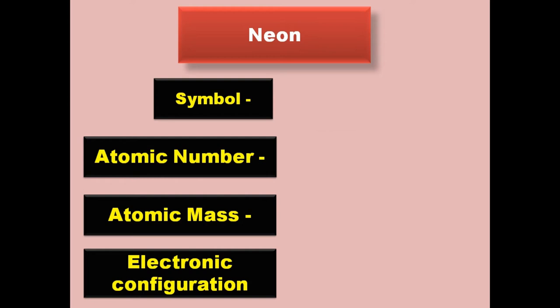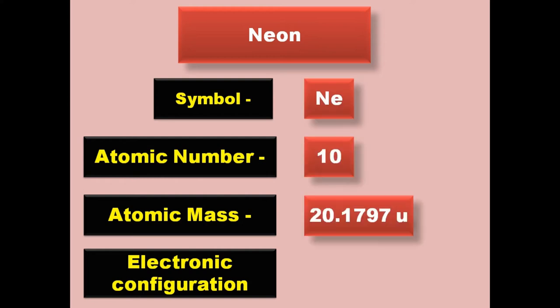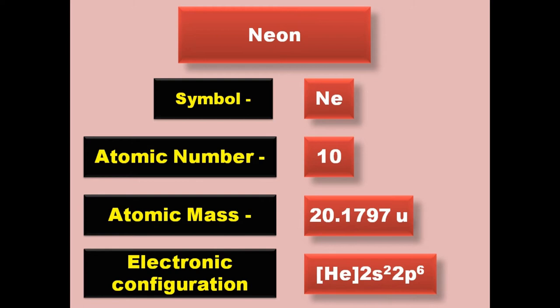Neon has symbol Ne, atomic number 10, atomic mass 20.1797, electronic configuration [He] 2s2. Neon is a noble gas and exists in gaseous form at room temperature.